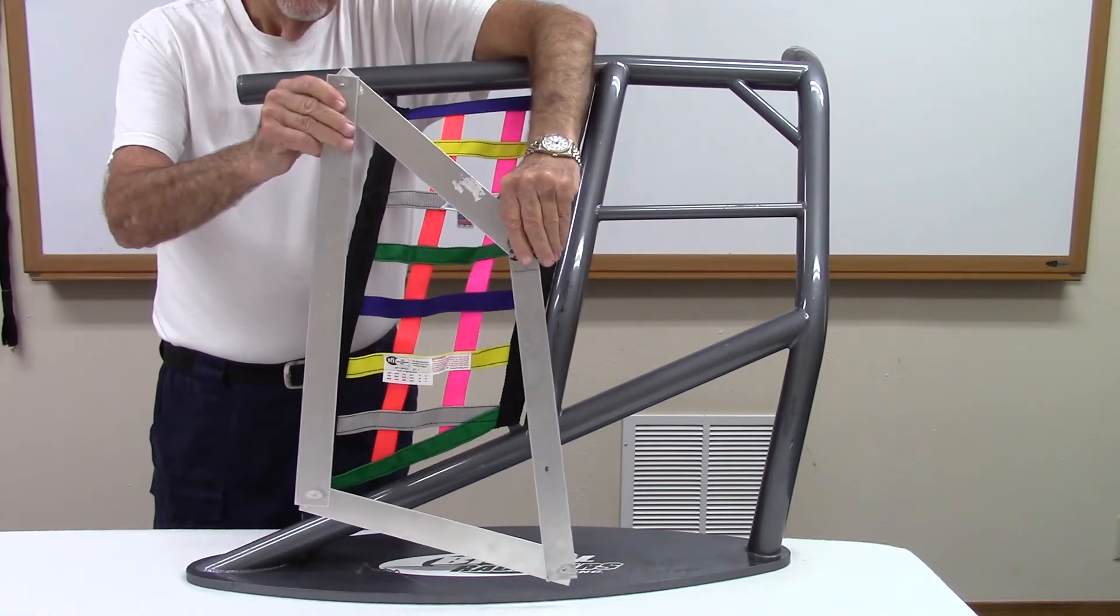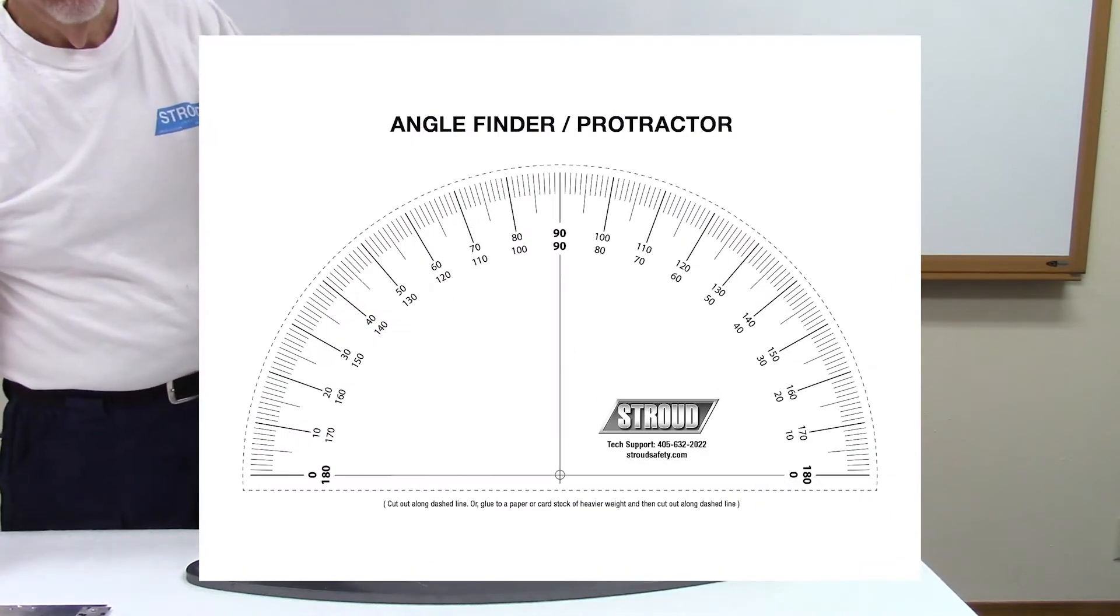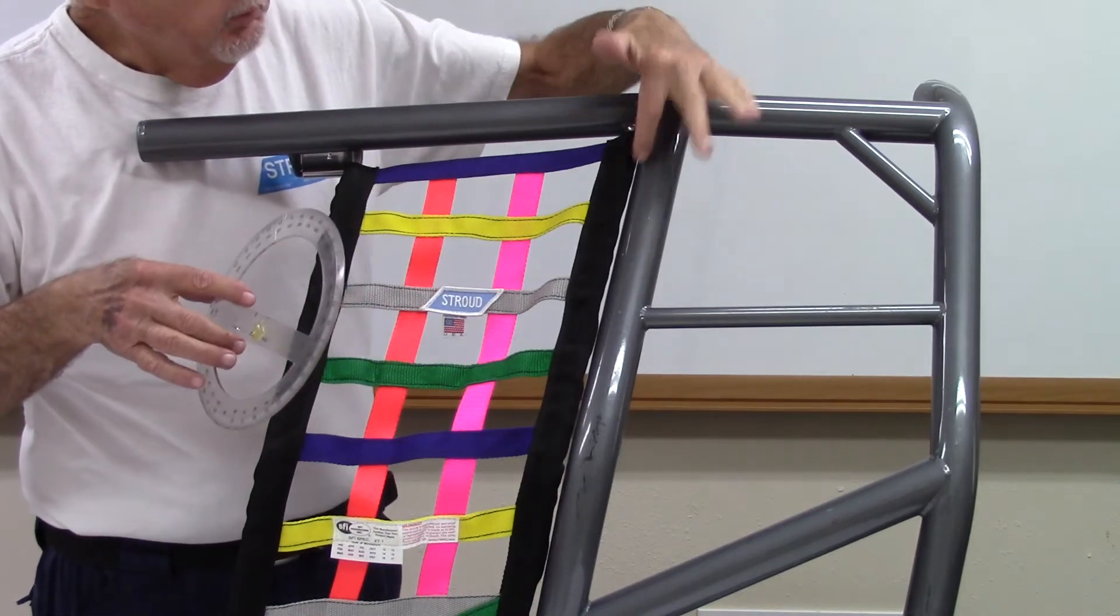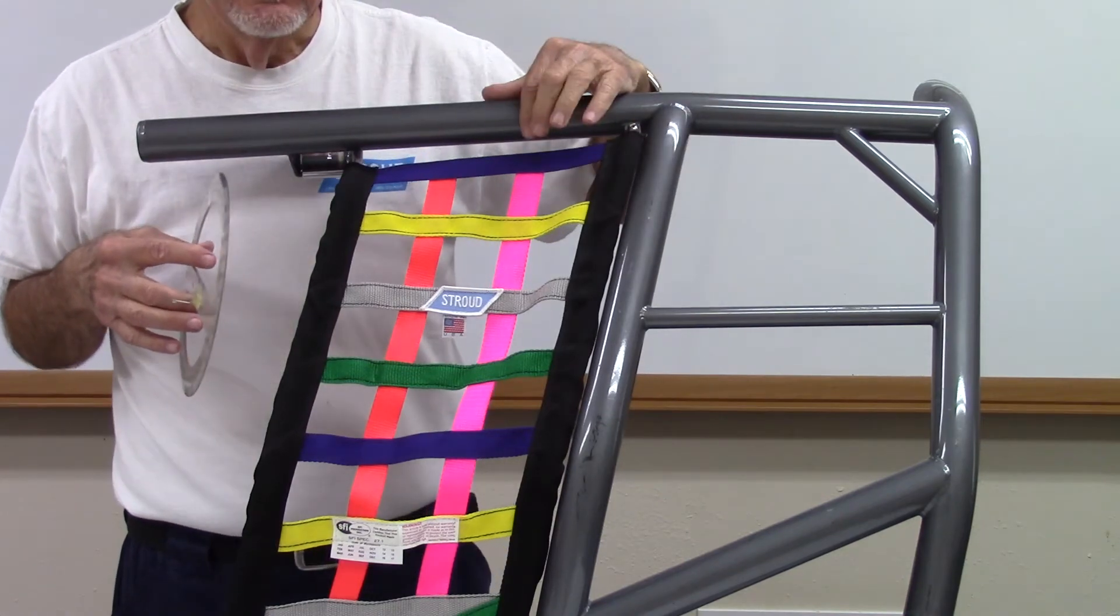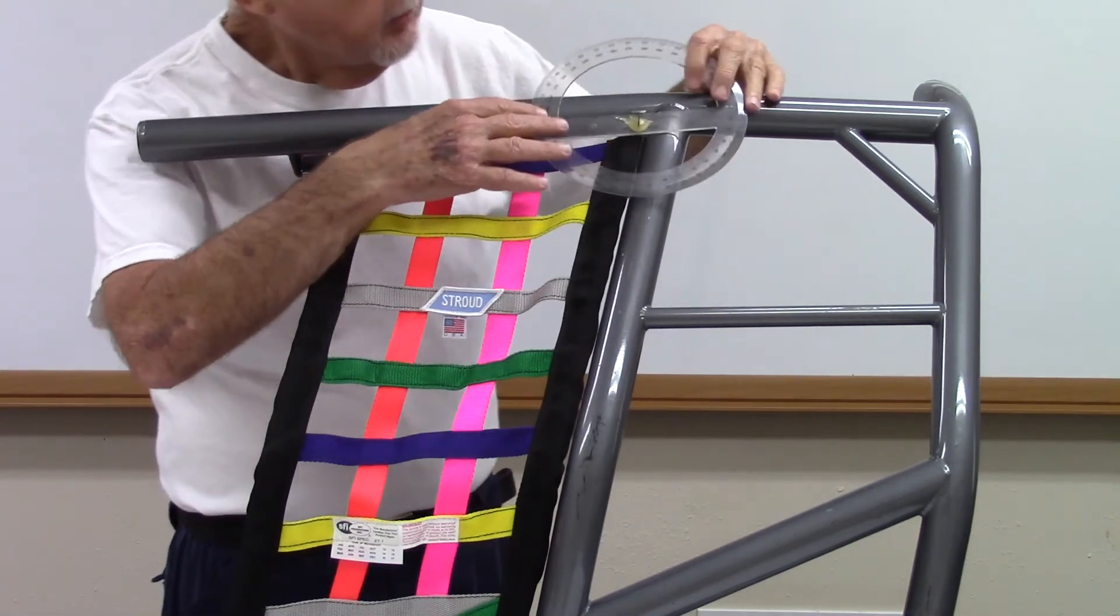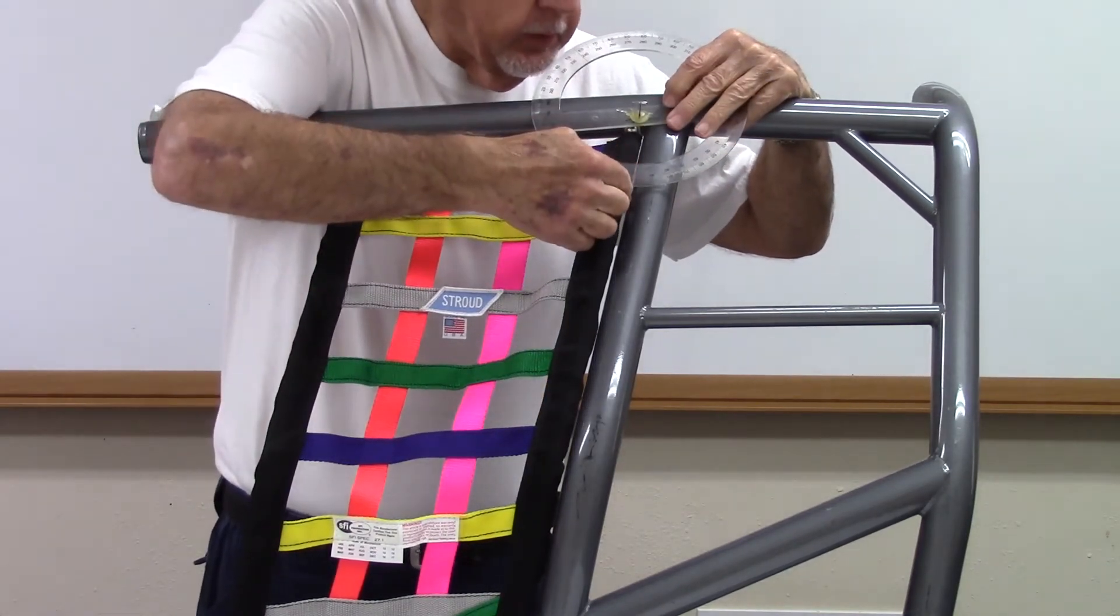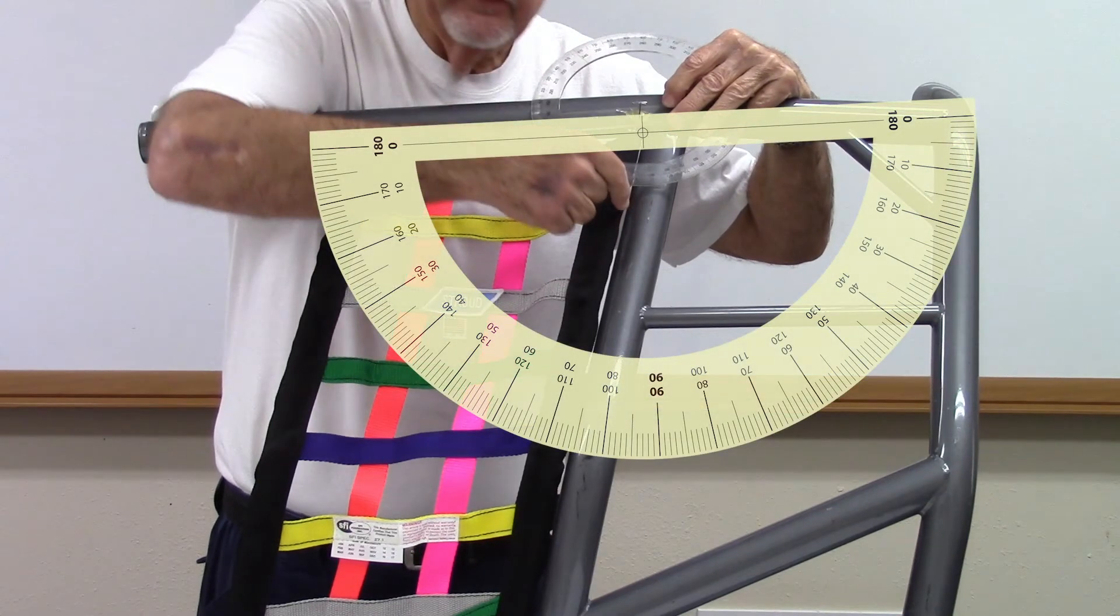If you don't have a protractor or angle finder available, there is an angle finder protractor you can print out that is available on the Stroud Safety website on the nets page. To determine your angles, first align the base of the protractor with the bottom edge of the top tube. Align the zero point of the protractor at the intersection of the bottom edge of the top tube and the inside edge of the rear vertical tube. Record the number of degrees indicated on the scale at the curved edge of the protractor that aligns with the inside edge of the vertical tube. In this example, the measurement is 75 degrees for the back corner.